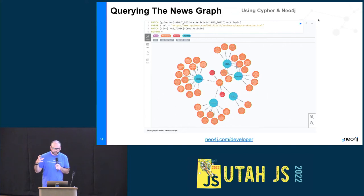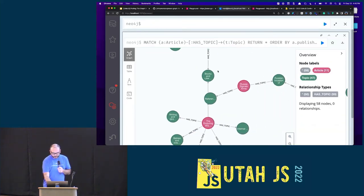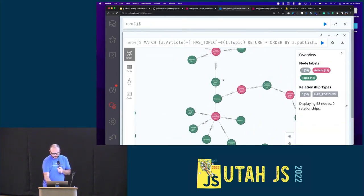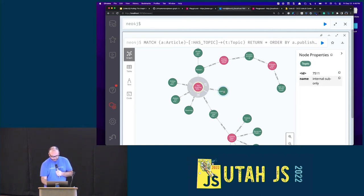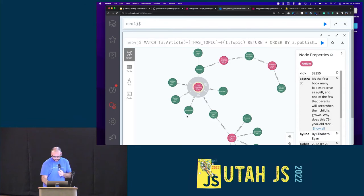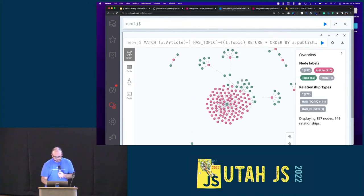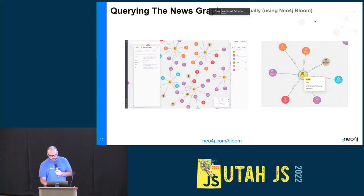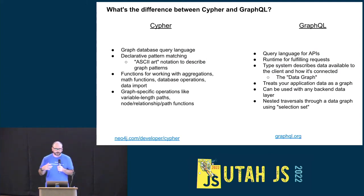Let's take a look at how we would do something like this in Cypher with Neo4j. We have the same data in Neo4j Browser, which is like a query workbench. Here's a query that finds articles that have a topic, giving me the 50 most recent sorted by date published. The article nodes are salmon colored, topics are green. I can double-click to expand and traverse the graph visually.